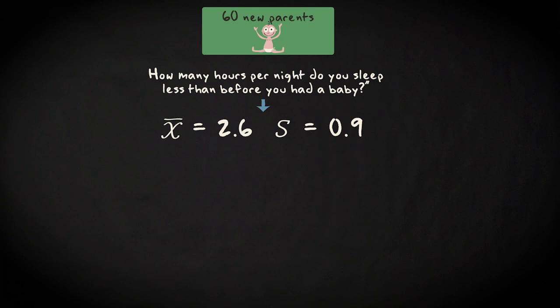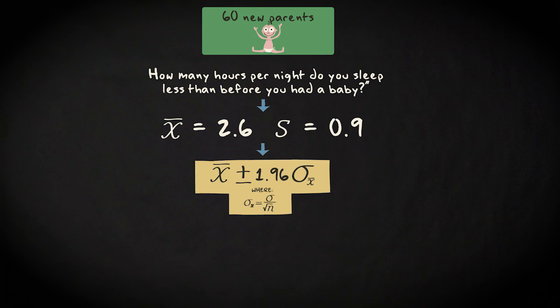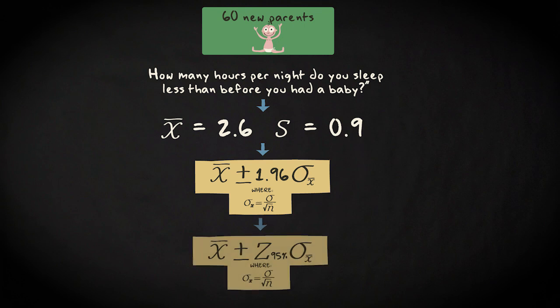To construct the 95% confidence interval, we need this formula: x-bar plus and minus 1.96 times the standard deviation of the sampling distribution of the sample mean, which equals the population standard deviation divided by the square root of the sample size. We can also write that as x-bar plus and minus the z-score for the 95% confidence level, which is 1.96, times the standard deviation of the sampling distribution.